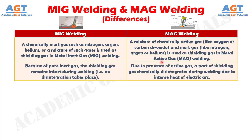Number two: because of pure inert gas, the shielding gas remains intact during welding — that is, no disintegration takes place in metal inert gas welding or MIG welding. Whereas, due to the presence of active gas, a part of the shielding gas chemically disintegrates during welding due to the intense heat of the electric arc in metal active gas welding or MAG welding.